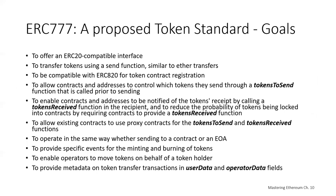ERC-777 is another attempt to solve some of the problems with ERC-20. Some of the goals of ERC-777 include offering ERC-20 compatibility, transferring tokens using a send function similar to Ether transfers, being compatible with ERC-820 for token contract registration, and allowing tokens and addresses to control which tokens they send through a special tokens-to-send function that is called prior to sending.